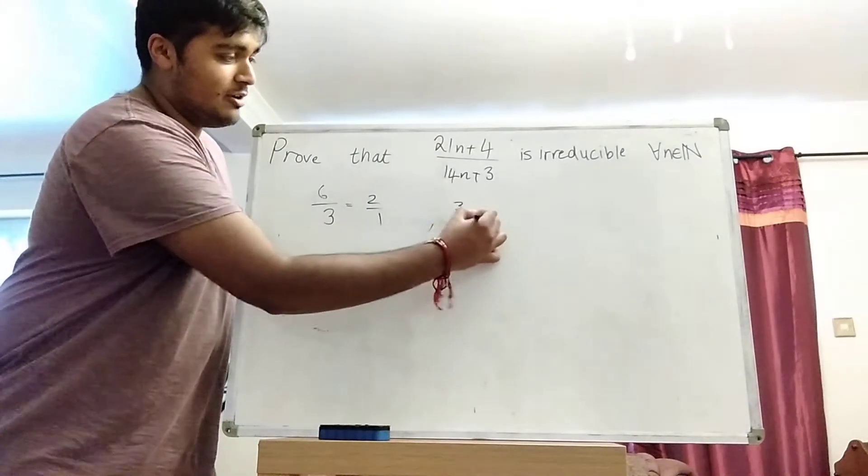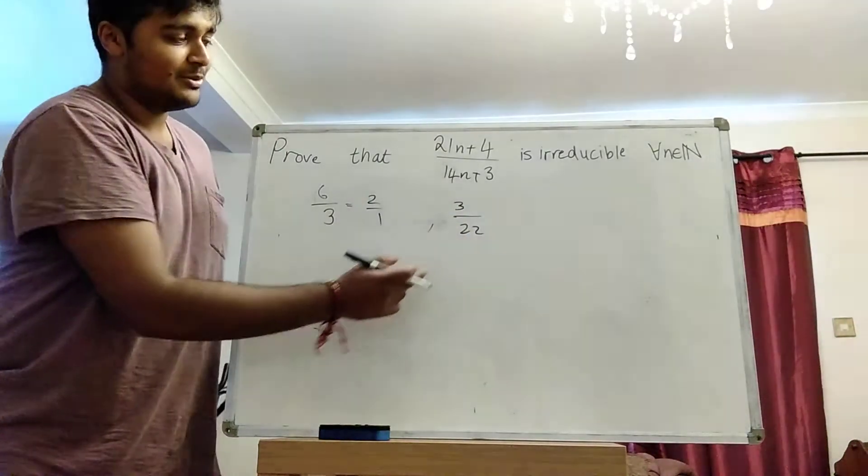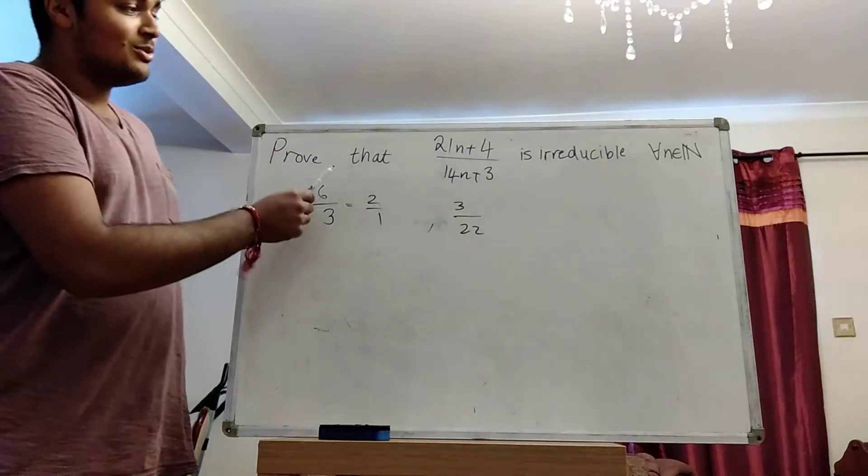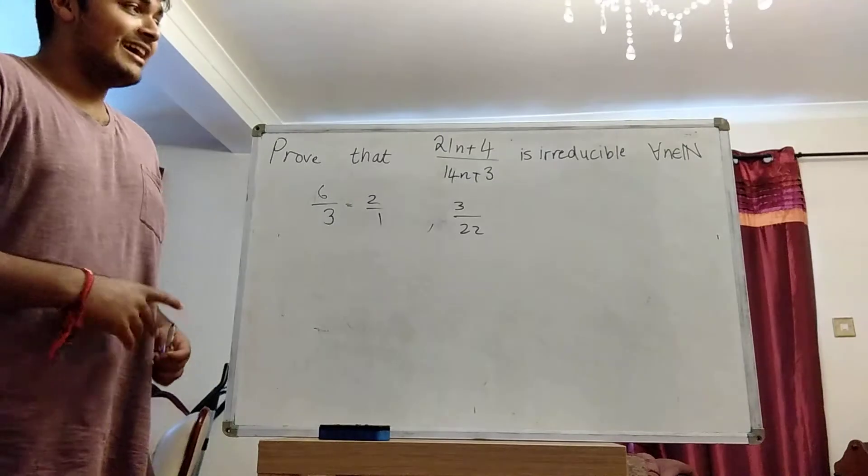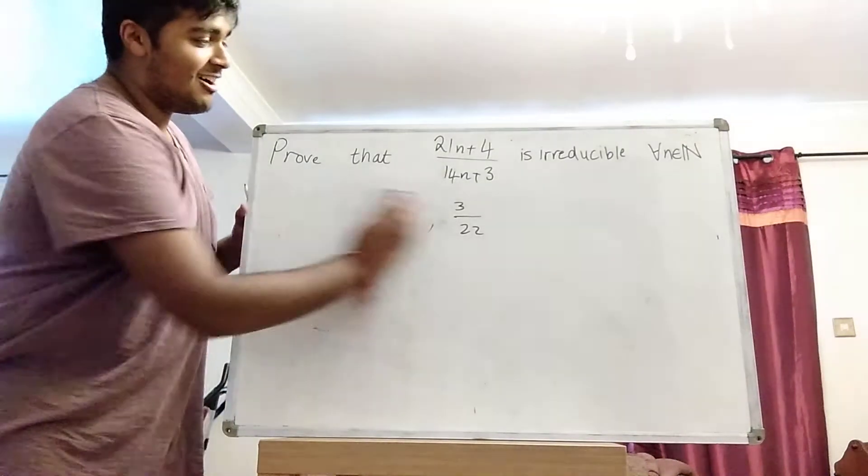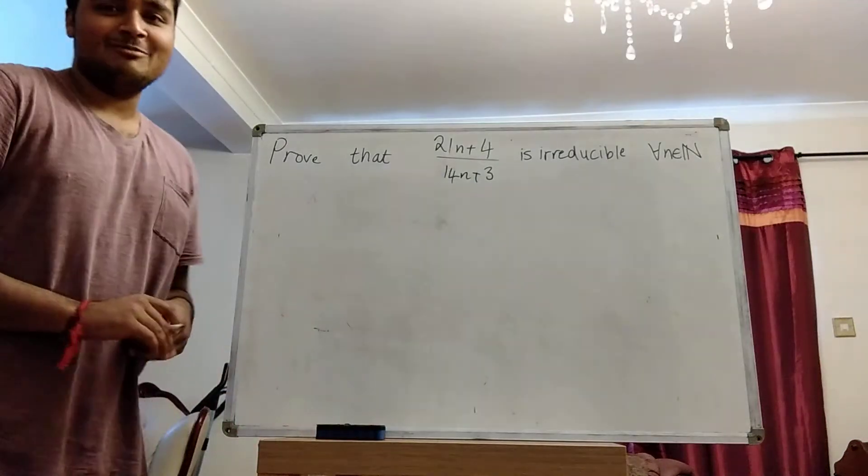But something like 3 over 22 is irreducible, because 3 and 22 share no factors. So if you want to pause the video now and have a go at this problem yourself, please do. And I'll go over a solution. It's very short, which is unlike a stereotypical IMO problem.